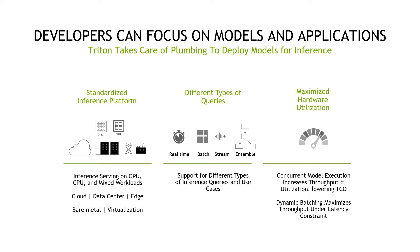Triton also has features to help maximize hardware utilization on both GPUs and CPUs to not only get better performance but to also reduce cost. For example, we have the ability to do concurrent model execution, which is where we run multiple different models or multiple copies of the same model on the same system to get better performance. Triton also has the ability to do dynamic batching, where we group together requests on the server side to get better performance.